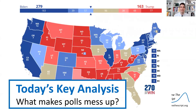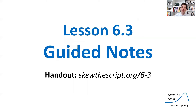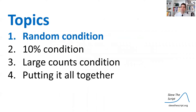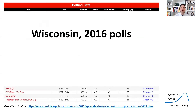So today's key analysis is: what makes polls mess up sometimes? First, we're going to talk about the random condition, and we're going to talk about it in the context of Wisconsin's 2016 polls.